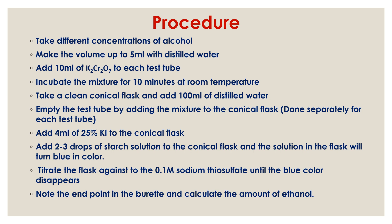After incubation, take a clean conical flask and add 100 ml of distilled water. Empty each test tube by pouring the mixture into the conical flask — one flask per test tube. Then add 4 ml of 25% potassium iodide to each conical flask. Add 2 to 3 drops of starch solution; the solution will turn blue. Titrate against 0.1 molar sodium thiosulphate until the blue color disappears. Note the end point from the burette and calculate the amount of ethanol.